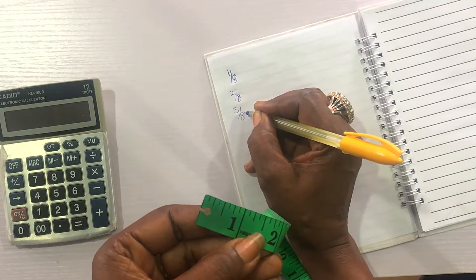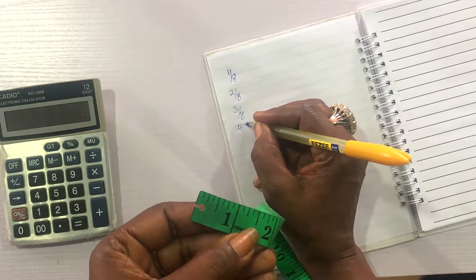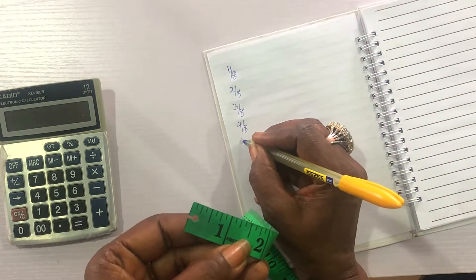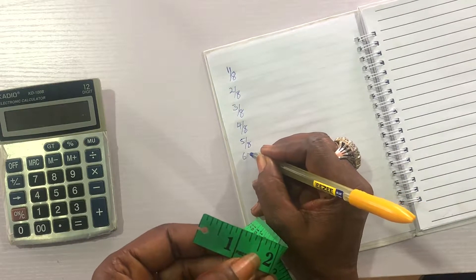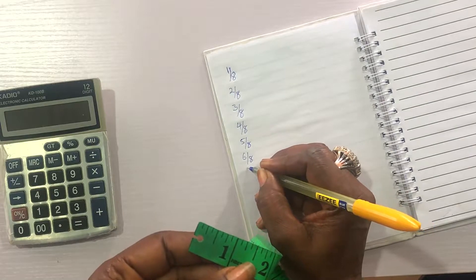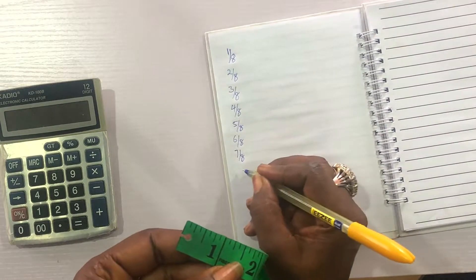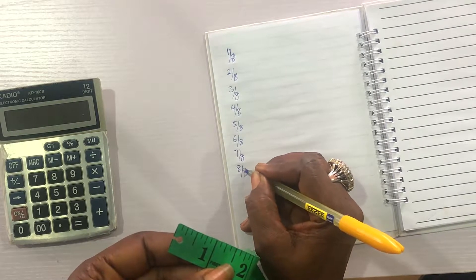You go to the fourth one, four over eight. The fifth one, five over eight. The sixth one, six over eight. The seventh one, seven over eight. The last one, which is the one inch is eight over eight.